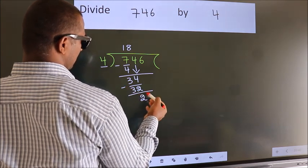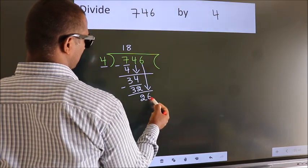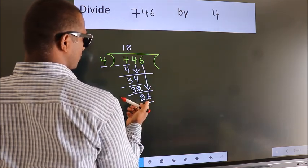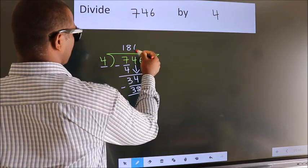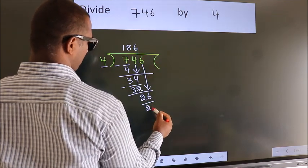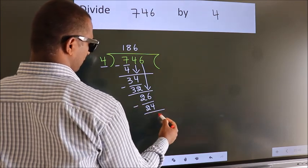After this, bring down the beside number. So 6 down, making 26. A number close to 26 in the 4 times table is 4 times 6, which is 24. Now we subtract. We get 2.